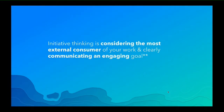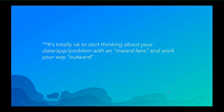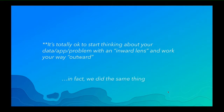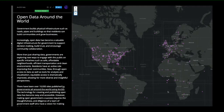Initiative thinking is considering your most external consumer of your work and clearly communicating an engaging goal. It's totally okay to start doing it the natural way and work your way out — that's kind of what happened to us in our R&D center. We work in the DC R&D Center at Esri. We make applications, some research-focused, some development. One of those applications was called Open Data, and now it's called ArcGIS Hub.